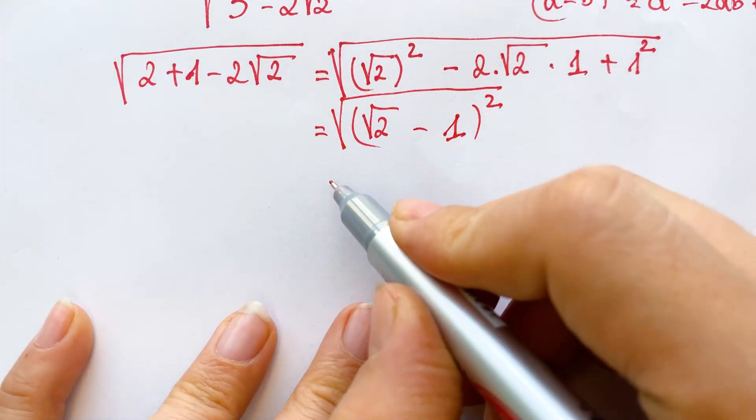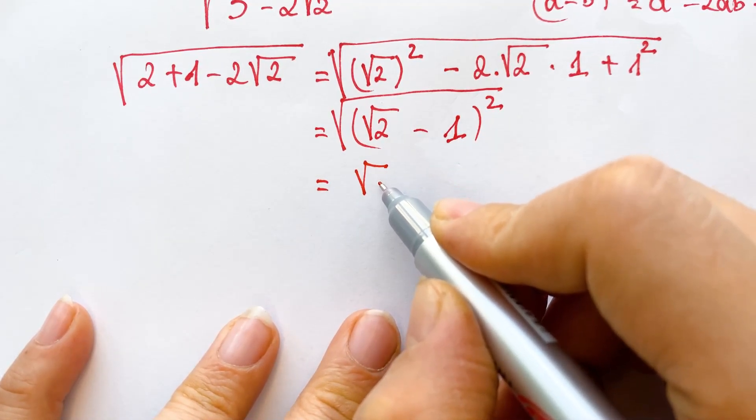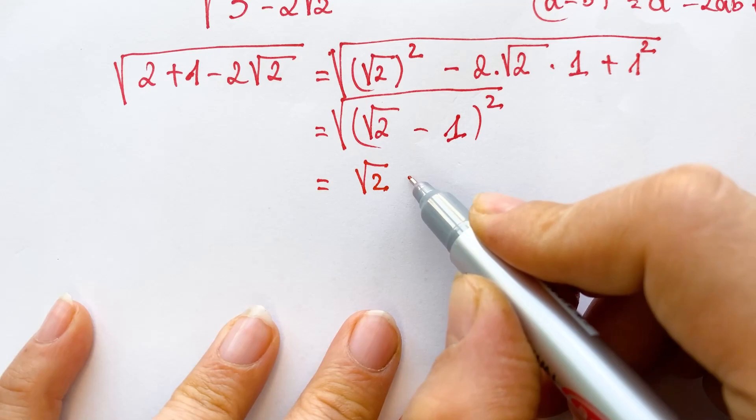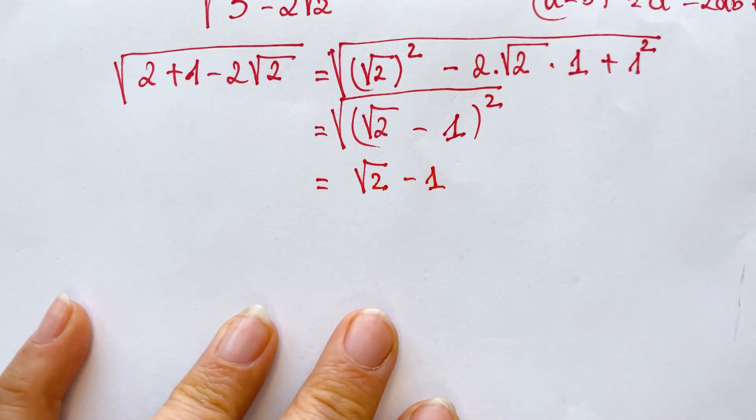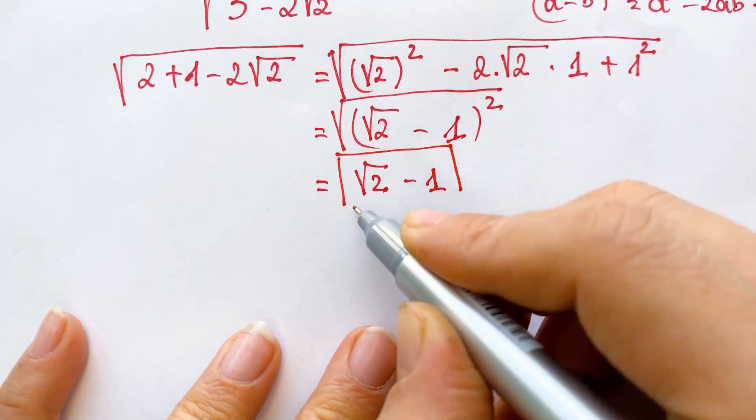And then it equals square root of two minus one. It's so easy, this is the key to the problem.